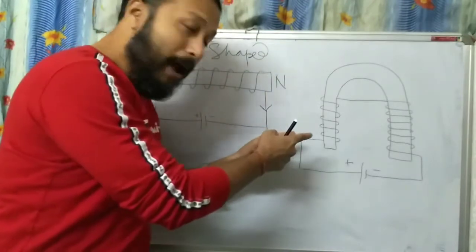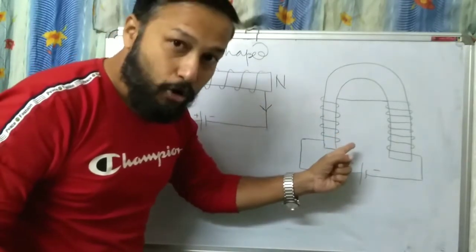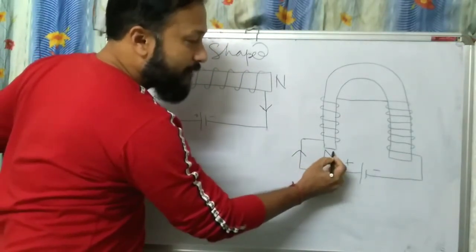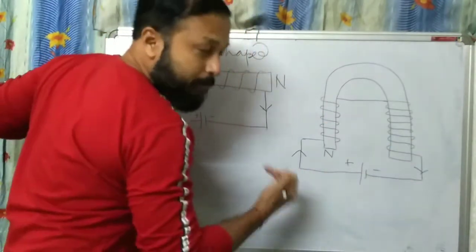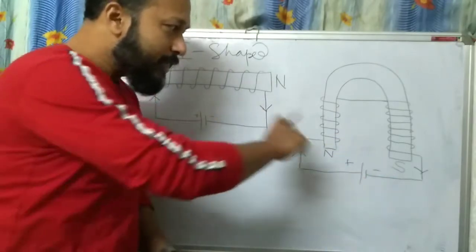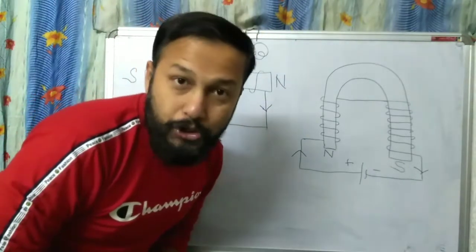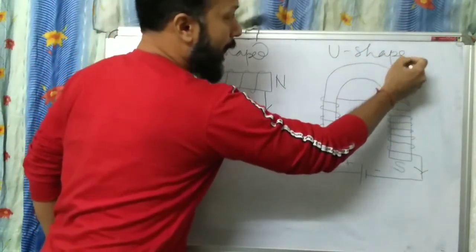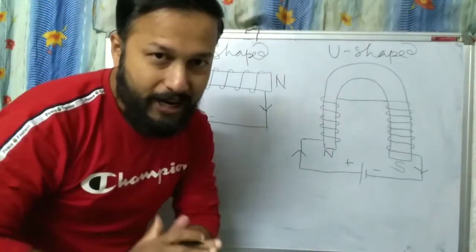Connect this with a cell — plus and minus. Then this bar will behave like a magnet. Current is entering one direction and that pole will behave like the north pole, while the other pole from where the current is coming out will behave as the south pole. Since the shape is like the letter U, we call it the U-shaped electromagnet. Both I-shaped and U-shaped electromagnets are equally important for your exam.